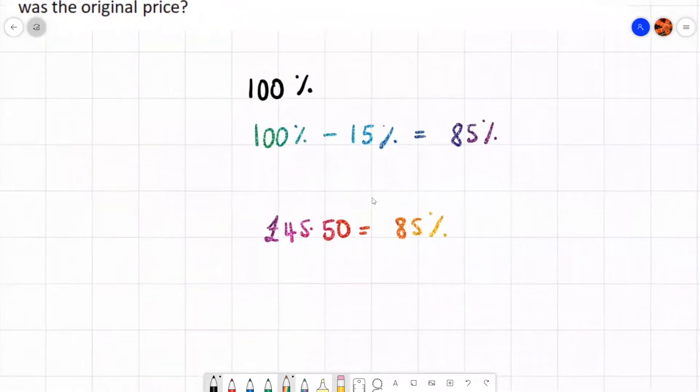So we want to work out the original value, which is 100%. So we're going to work at 1% first because that's easier and then we can work at 100%. Well, what do we do to 85 to end up with 1? Well, we divide by 85, don't we? Because 85 divided by 85 is 1.